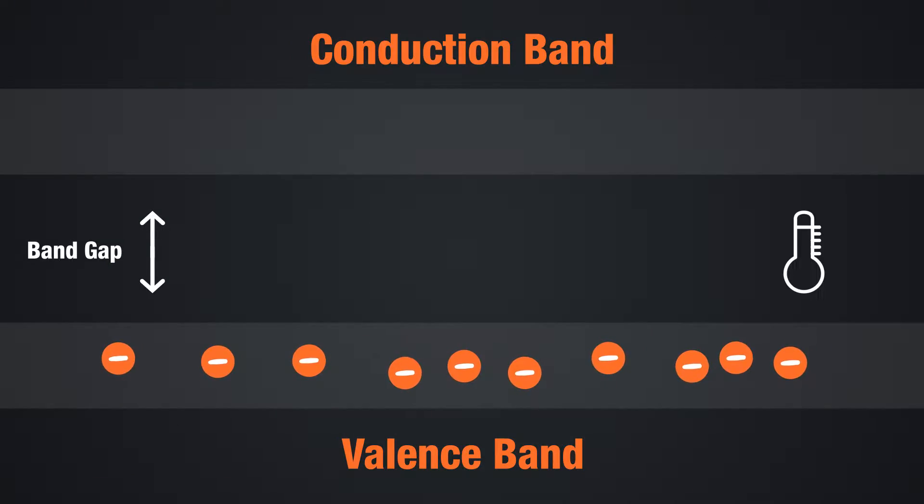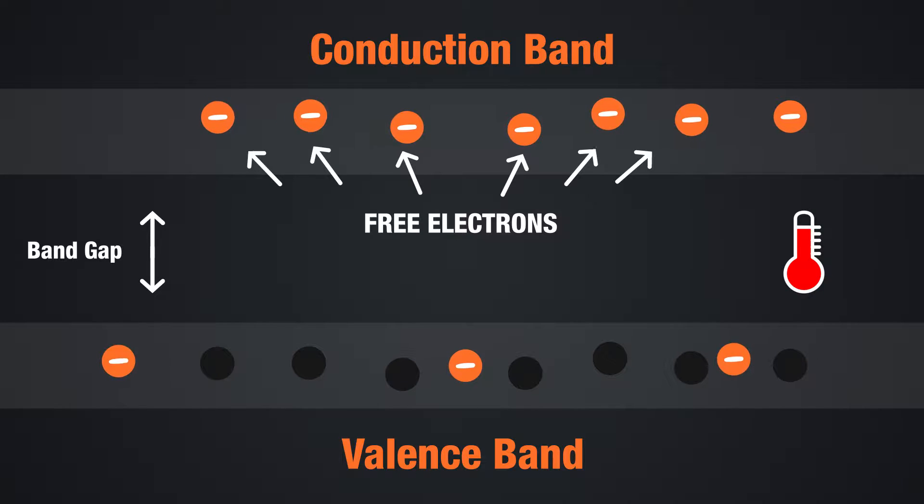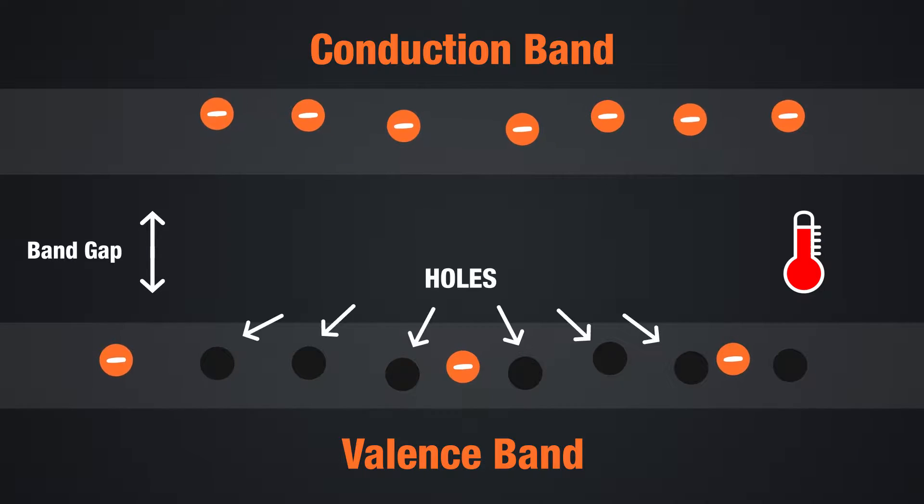Semiconductor materials have two current carriers, free electrons and holes. In an intrinsic semiconductor material, free electrons are produced when the material receives sufficient thermal energy that provides valence electrons from the valence band enough energy to jump to the conduction band and turn into free electrons. When valence electrons jump to the conduction band, they leave vacancies in the valence band, and these vacancies are called holes.